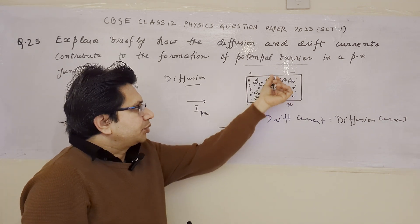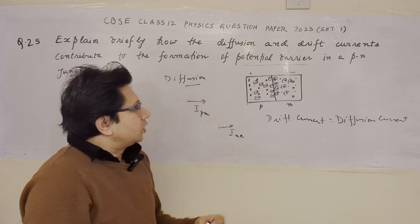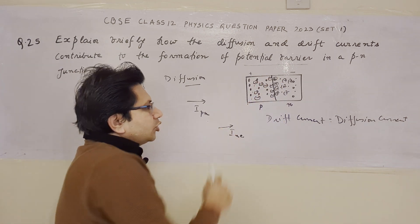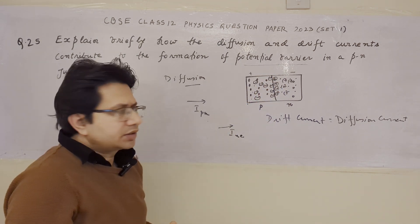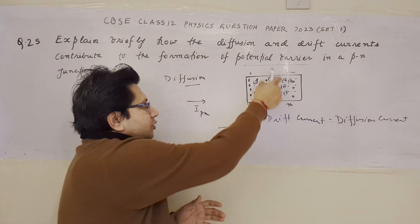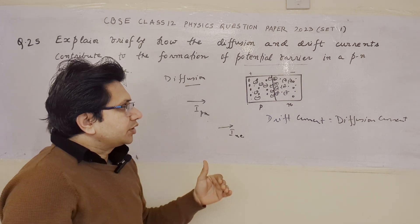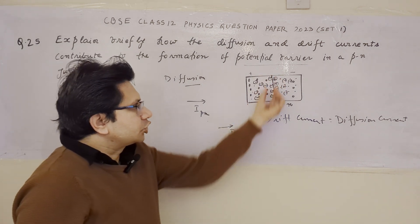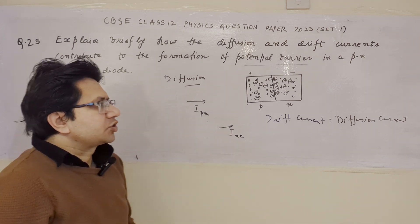Near the junction, recombination takes place and the charges disappear, generating energy. The ions near the junction region are uncovered and form the depletion region. These ions create a resistance to further carrier movement. The resulting potential at this junction is what we call the barrier potential. This completes the explanation.